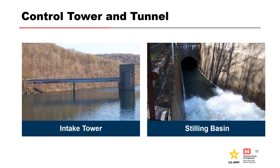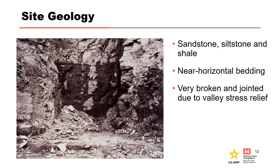The outlet works consist of a 10-foot diameter, 1,250-foot long concrete-lined tunnel through rock in the right abutment, a gated control tower, and a stilling basin. The foundation and abutment rock consists of sandstone, siltstone, and shale with near-horizontal bedding. As shown in the photo, the rock is very broken with significant joints and fractures on the abutments due to valley stress relief.